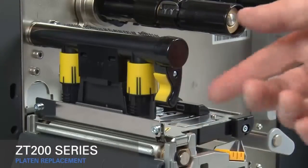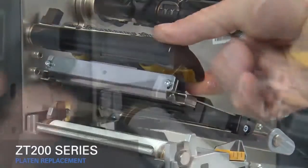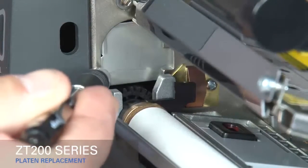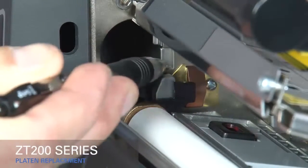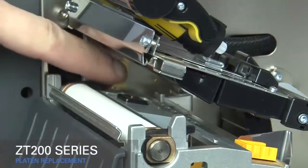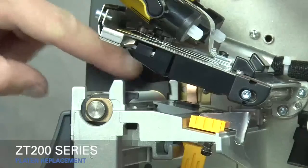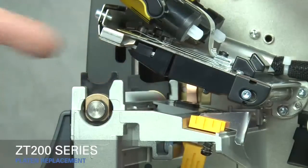Rotate the gold printhead lever up to open the printhead. Insert a ballpoint pen into the slide hole and move the gear cover toward the back of the printer. Turn the inner and outer lock tabs of the platen roller assembly toward the front of the printer.